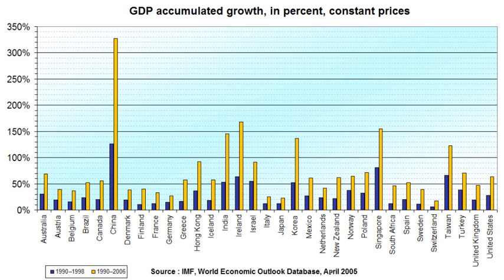Schumpeterian growth is an economic theory named after the 20th century Austrian economist Joseph Schumpeter. The approach explains growth as a consequence of innovation and a process of creative destruction that captures the dual nature of technological progress. Entrepreneurs introduce new products or processes in the hope that they will enjoy temporary monopoly-like profits as they capture markets. In doing so, they make old technologies or products obsolete, destroying the rents generated by previous innovations. A major model that illustrates Schumpeterian growth is the Aghion-Howitt model.